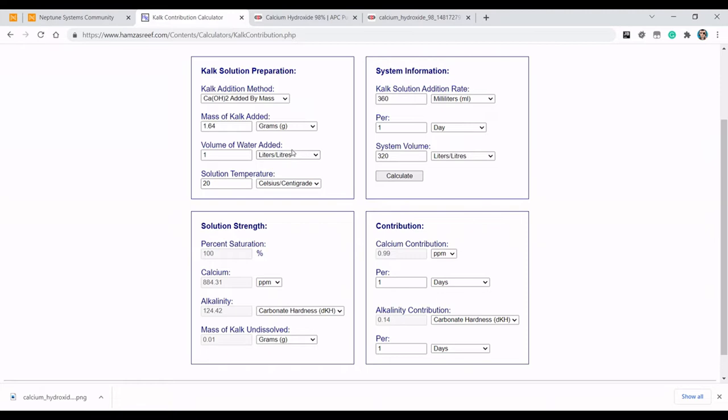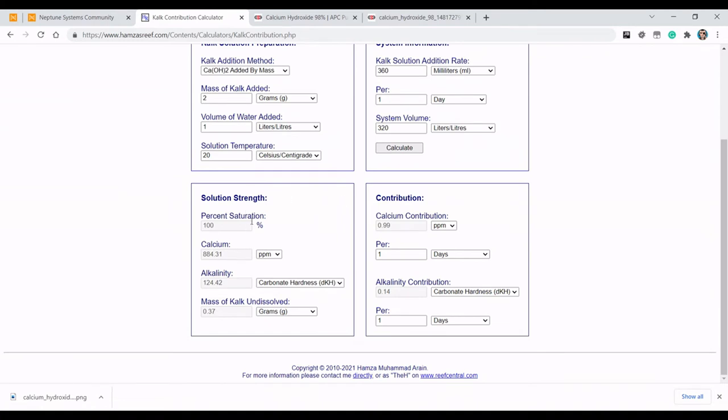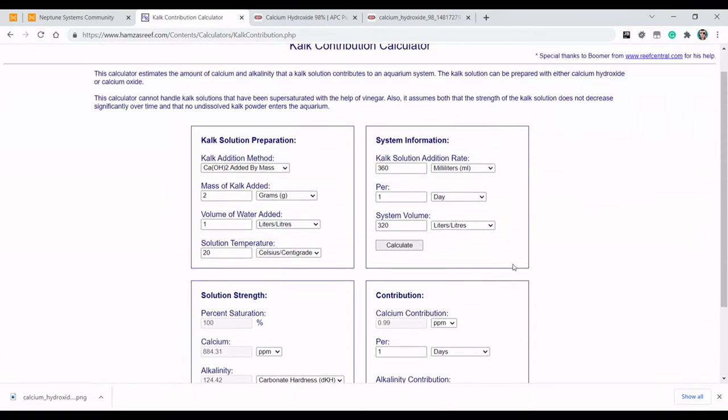Hopefully that makes sense. For example, if I say I want to add 2 grams of Kalkwasser to 1 litre of water at 20 degrees Celsius, click Calculate. It shows me the solution strength is going to be 100% saturated with a calcium of 884 parts per million and an alkalinity of 124.4 dKH carbon hardness. And there will be an undissolved mass of Kalkwasser at the bottom of the container of 0.37 grams.